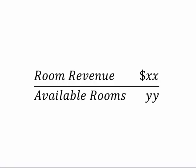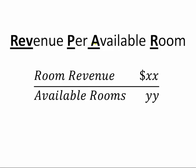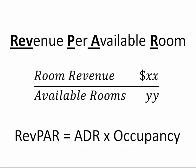To review: RevPAR is simply taking room revenue and dividing by available rooms, or revenue per available room. You can also take average daily rate (ADR) and multiply it by occupancy to achieve your RevPAR statistic.